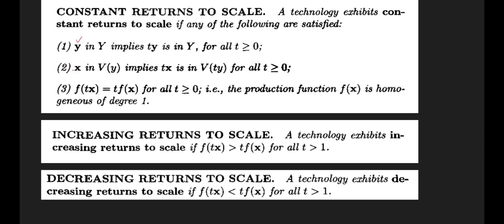The second condition: this is the vector of factor inputs, and it is used to produce a certain level of output. If this vector of factor inputs belongs to the input requirement set, then we can also scale up the factor inputs by t, because to increase the output level you have to increase the factor inputs. Since x belongs to the input requirement set, then t times x must also belong to the input requirement set, ensuring the possibility that we can increase the input bundles by t.